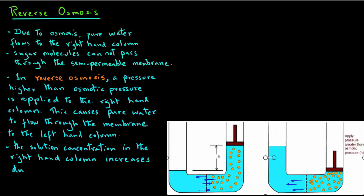And as a result, the sugar concentration in the right-hand column will increase, and this will be due to reverse osmosis. So, as we see in this process, we are applying pressure to realize reverse osmosis and concentrate the solution in the right-hand column.